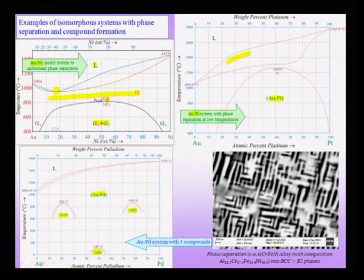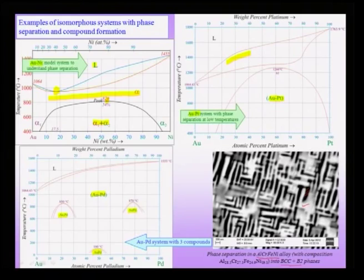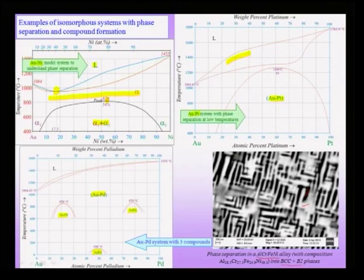On the right-hand side bottom, we can see a micrograph showing a two-phase system. This is an aluminum-chromium-iron-nickel alloy with two phases, having a composition of approximately aluminum 28%, chromium 27%, iron 24%, and nickel 19%, in which two phases separate out: the BCC and B2 phases, B2 being the ordered version of BCC. You can clearly see the dark phase which has been etched out and the light white phase, both containing all four alloying elements. The B2 phase is expected to be rich in aluminum, because aluminum along with nickel is a nice compound former. The uniform solid solution at high temperatures, when cooled, split into two phases — the BCC and B2 phases — and this kind of decomposition is called spinodal decomposition.